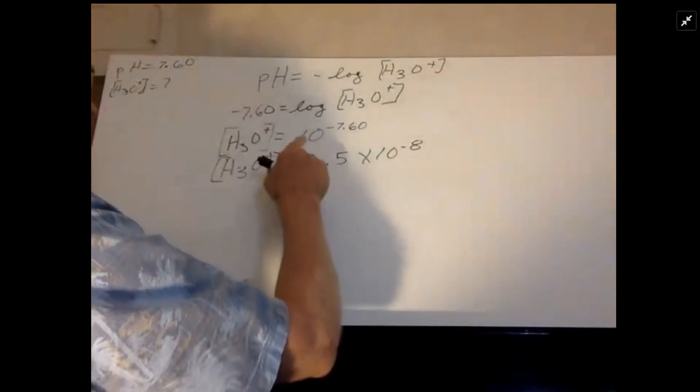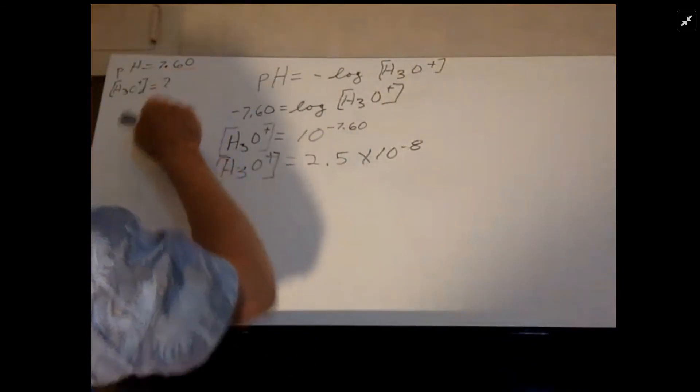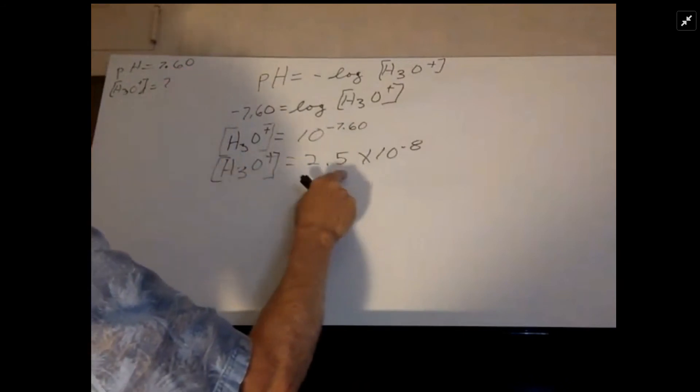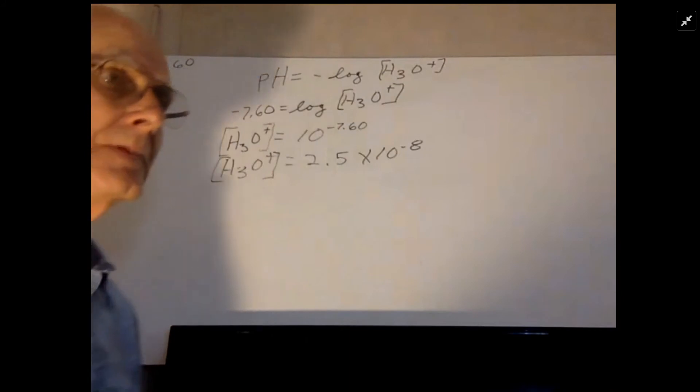And in this case, it's going to be really small because it's 10 to the negative 7.6. The .60 is telling me what the number is, and since that's only two significant figures, you really only want two significant figures in your answer.